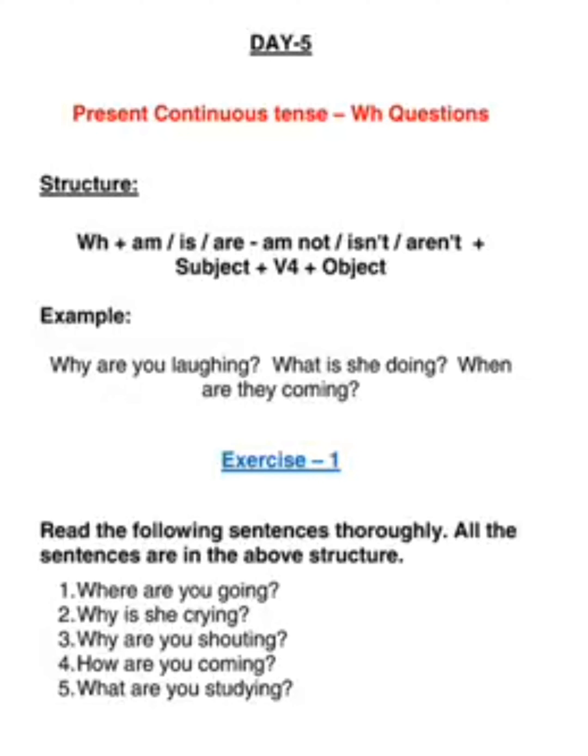Now we can see many examples. Why are you laughing? What is the structure there? We put why, we put are before the subject, then you the subject, and the V-ing. What is she doing? You should not say 'what she is doing' — that's not really very good English. You should say 'what is she doing.' In all questions, the helping verb should come before the subject.